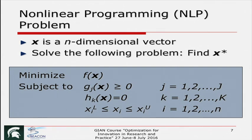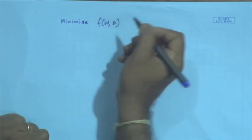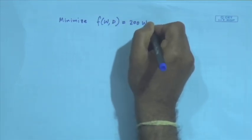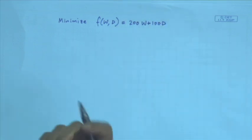So f(W, D) equals the expression given: minimize f(W, D) = 200W + 100D. Then below you write 'subject to' g₁(W, D) for the first constraint, greater than or equal to 10,000 — I think — and then g₂ and g₃, and then write the variable bounds.